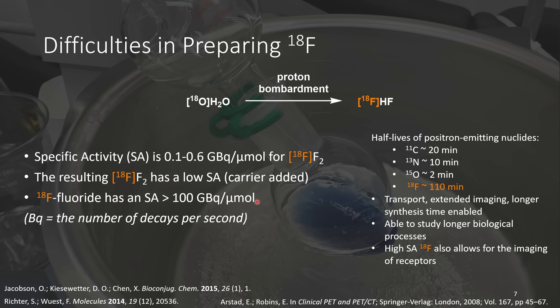In the case of water, 18F HF is formed, but in the case of 18FF2, it has to be extracted from the cyclotron target using elemental fluorine gas. That means that the resulting fluorine is diluted by the 19FF2 gas, so the final 18FF2 has a low specific activity. The takeaway from this is that if you want high-activity fluorine, you need to use 18F fluoride.